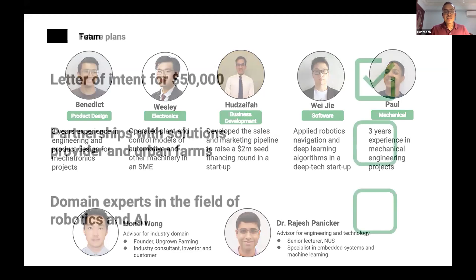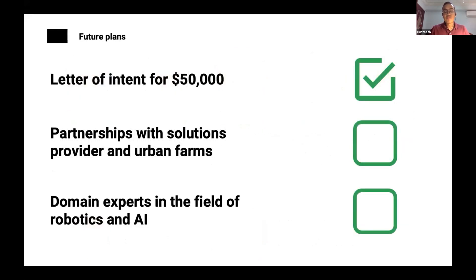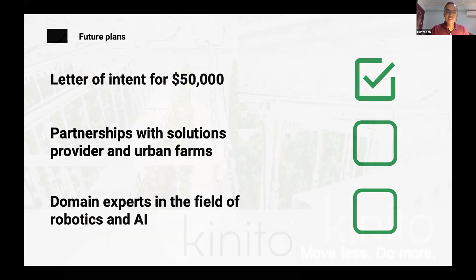We've already secured a letter of intent for $50,000 worth of sales. We are looking for two things: firstly, partnerships with solutions providers and urban farms; and secondly, domain experts in the field of robotics and AI. If you are, or know anyone who fits what we are looking for, please come and contact us.